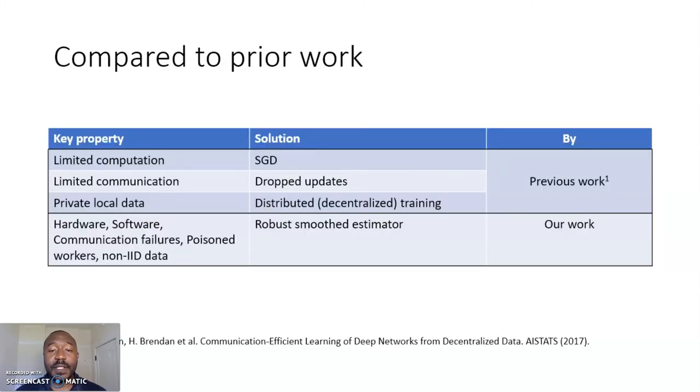The proposed approach inherits lots of good properties from previous work. So, this includes robustness to potential dropouts and limited participation in each round, but also adds robustness to failures, and I think importantly improves convergence with non-IID data via smoothing.